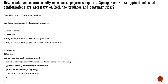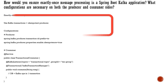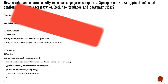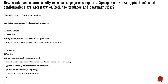The next question is: how do you ensure exactly-once message processing in a Spring Boot application, and what configuration is necessary for both producer and consumer sides? Exactly-once means there should be no duplicate and no loss of data. Kafka uses transactions and an idempotent producer. On the producer side, you need to set a transaction ID prefix and enable idempotency by setting enable.idempotence=true.